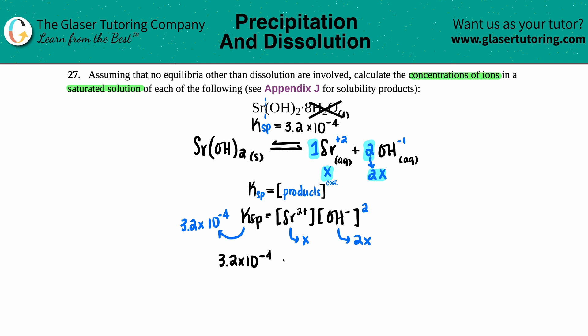So the Sr would be an x, the OH would be a 2x. And now let's plug it in: 3.2 times 10 to the negative fourth equals x times 2x squared.